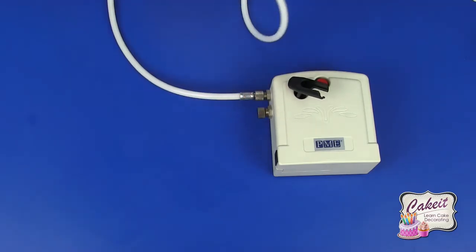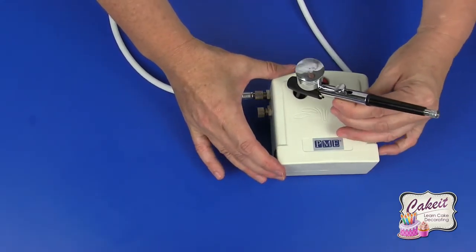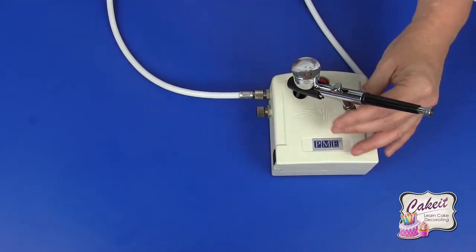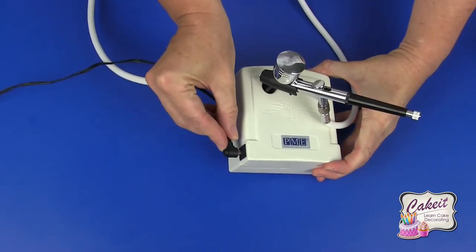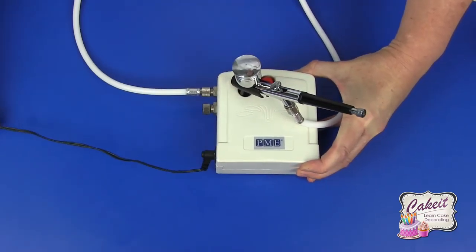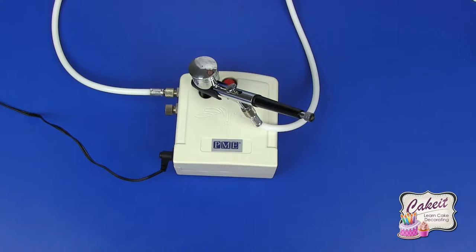Now this can go into the holder like so, and then we're ready to insert the power plug into the recess. And that concludes how to put together the airbrush and compressor kit.